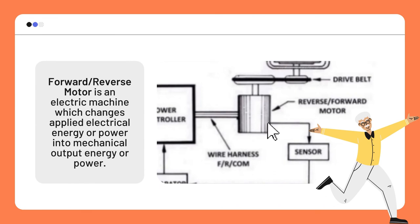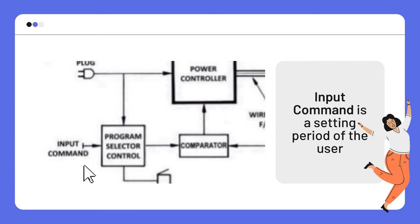Next, the forward or reverse motor: it is an electric machine which changes applied electrical energy or power into mechanical output energy or power. Input command: it is a setting period set by the user. AC plug: it is a connector intended for connecting the unit to the main power source of 220 volts.